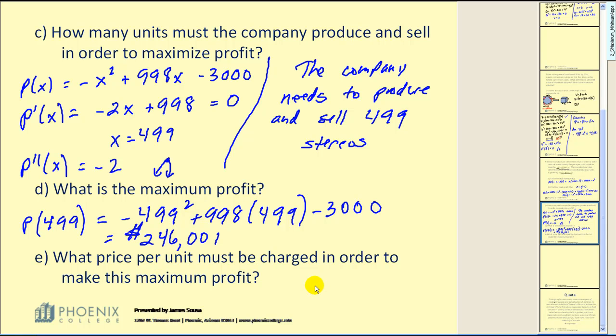And the last question, what price per unit must be charged in order to maximize profit? The price function is equal to 1000 minus x. So in this case, 1000 minus 499 would give us a price per stereo of $501.